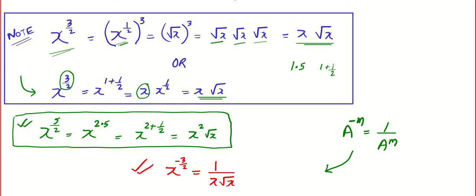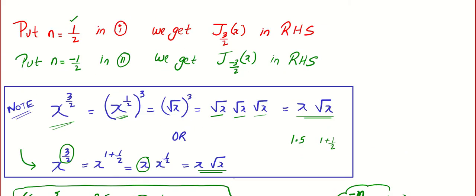Similarly, if you have x to the power 5/2, you have to understand it is like 2 and a half. So there will be x times x, that is x squared times root x. And one more very important thing: suppose we have a^{-m}, that is 1 divided by. So if you ever get x^{-3/2}, you have to understand 1 by x root x.